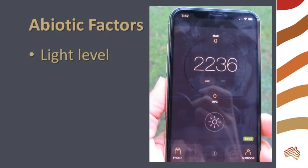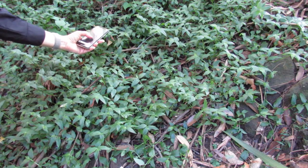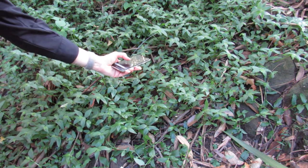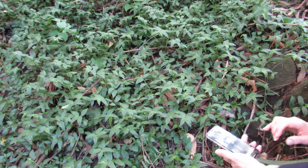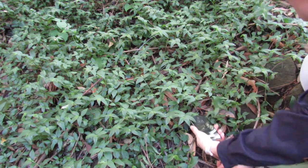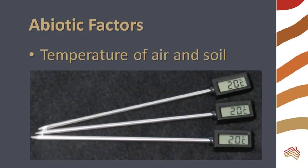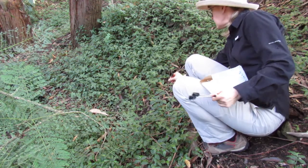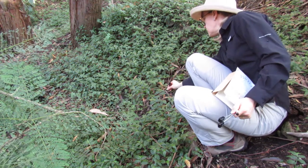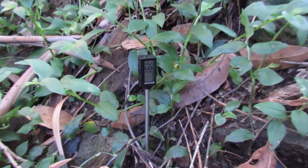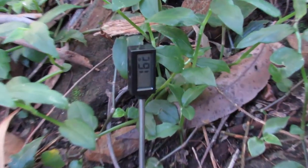We will start looking at abiotic factors by measuring light level. I'm measuring both above and below my study plants in order to see how they affect light levels at the soil. I'm also measuring the temperature of air and soil in my study area. Soil changes temperatures slowly — my soil was six degrees cooler than the air.